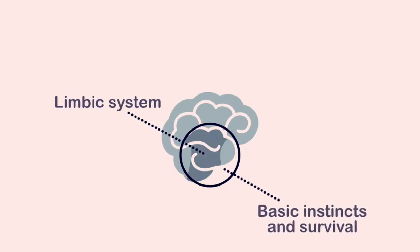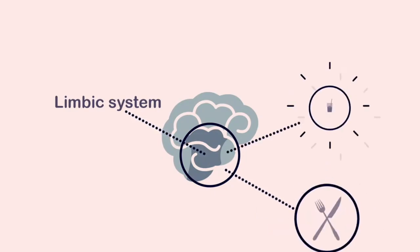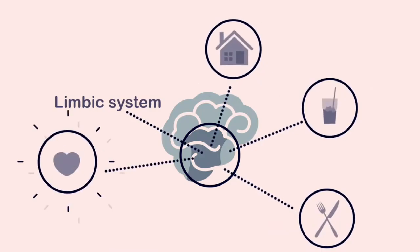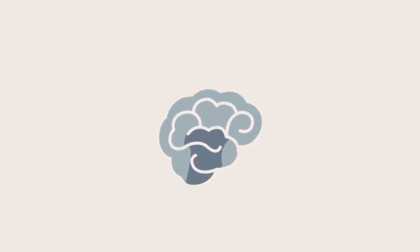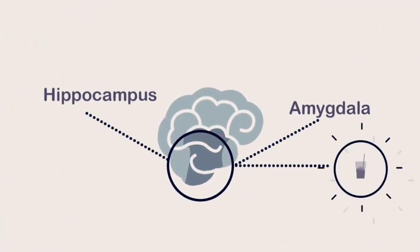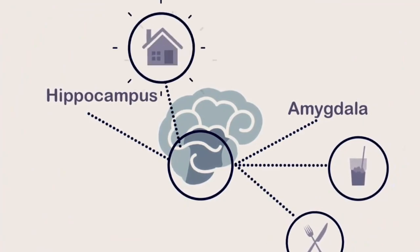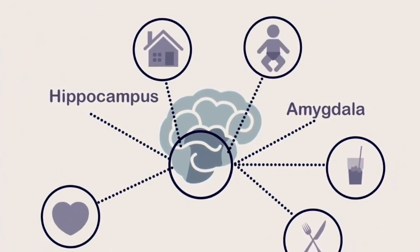So when you do essential things to stay alive, like eat, drink, find shelter, have sex, or care for your young, your brain reinforces these behaviors that cause the release of dopamine from this region. That reward for surviving is also transmitted to the amygdala and hippocampus, which record a memory of that event. This is our survival hardwiring.